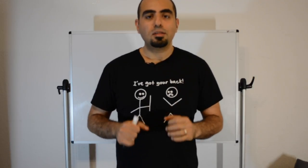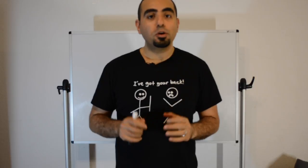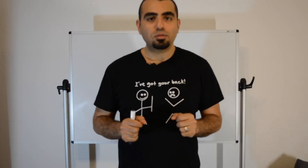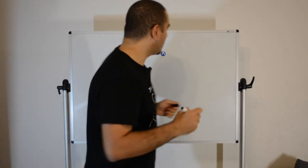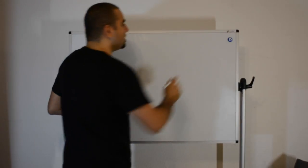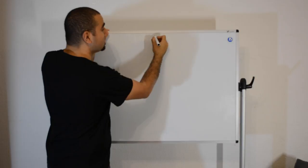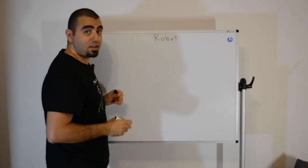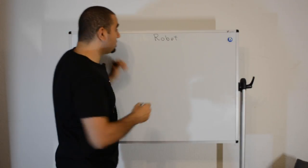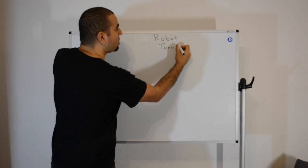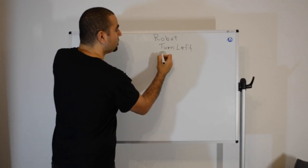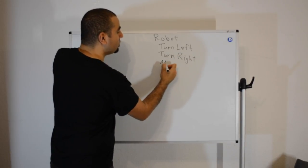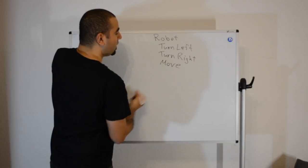Hello everyone, today we're going to be solving the room cleaning robot problem which may seem a little bit tricky at the beginning, but once you get the idea behind it you'll find how easy it is. The problem gives us an interface called robot which can perform a couple of actions: turn left, turn right, move, and clean.